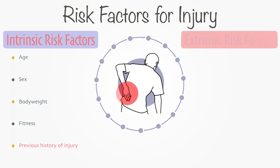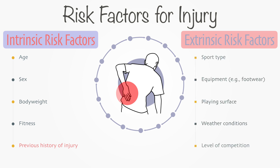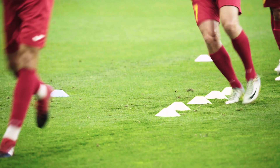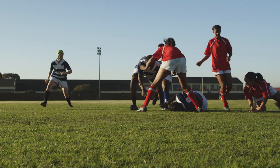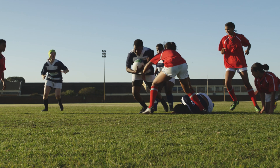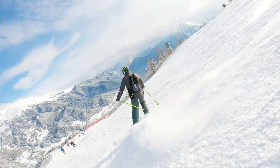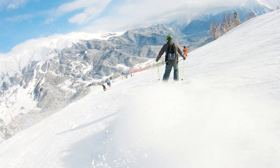Then we have extrinsic risk factors — things that are external to the athlete. These can include the type of sport they are engaging in, their equipment like their footwear, the surface they are playing on, or even the weather. Sports that involve high impact movements, sudden direction changes, and jumping, such as football, basketball, and skiing, have a particularly high risk.